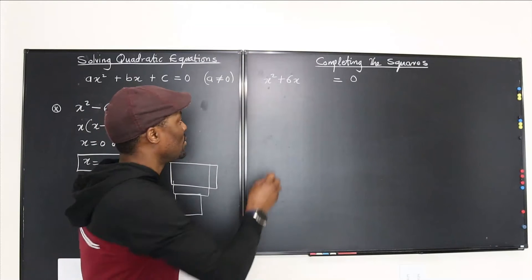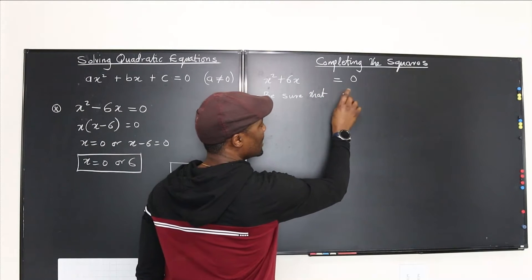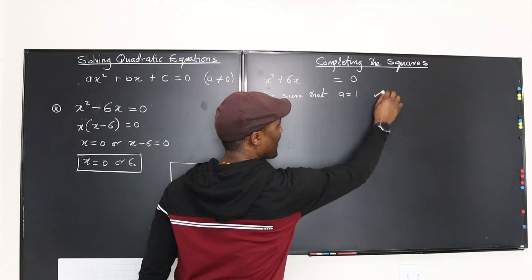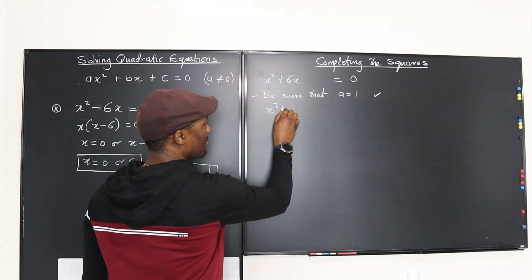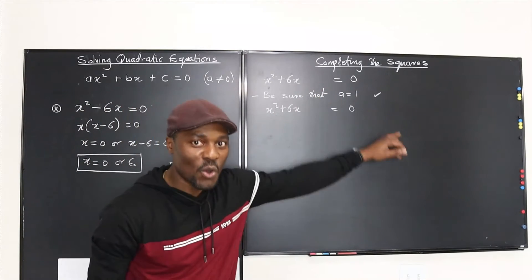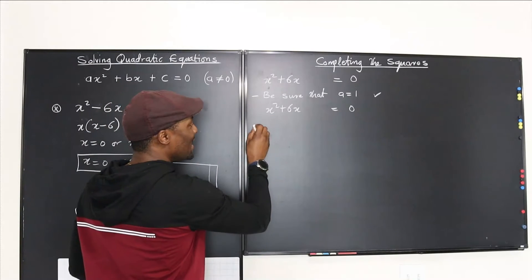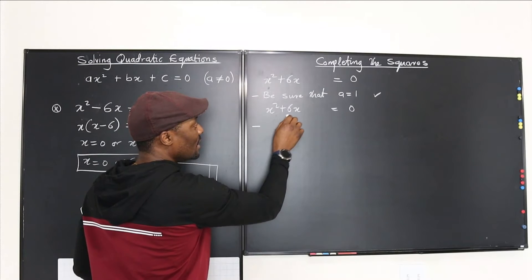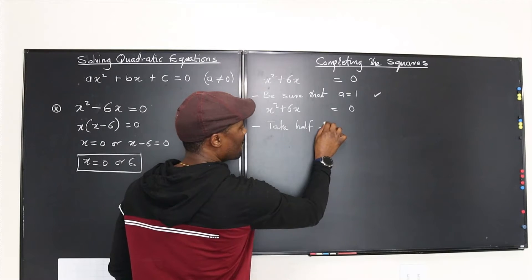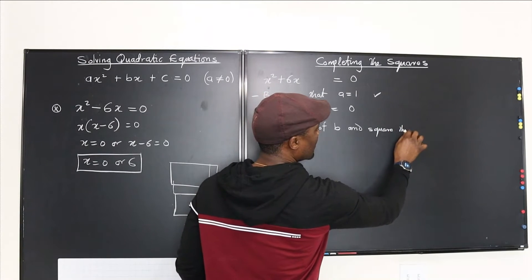Let's write out the steps. Step one: be sure the leading coefficient is positive 1 — that a equals 1. We get a checkmark for that. Step two: make sure the constant has been moved to the other side. Since we don't have one here, we move on. Step three: take half of b and square the result.